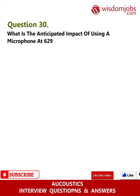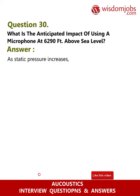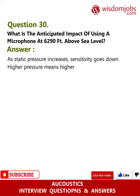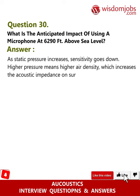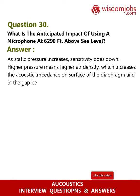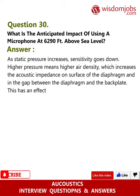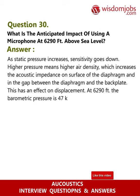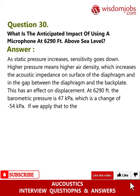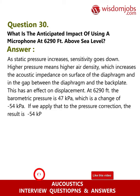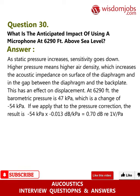Question 30: What is the anticipated impact of using a microphone at 6,290 feet above sea level? Answer: As static pressure decreases, sensitivity goes down. Higher pressure means higher air density, which increases the acoustic impedance on the surface of the diaphragm and in the gap between the diaphragm and the back plate. At 6,290 feet, the barometric pressure is 47 kilopascals, which is a change of minus 54 kilopascals. Applying the pressure correction: minus 54 kilopascals multiplied by minus 0.013 dB/kPa equals 0.70 dB re 1 V/Pa.